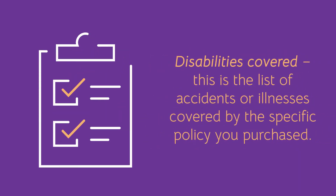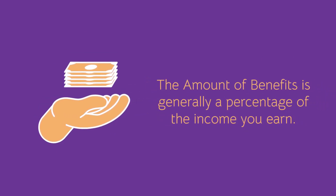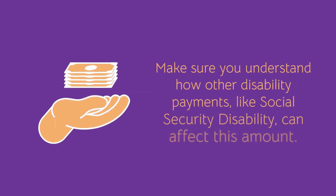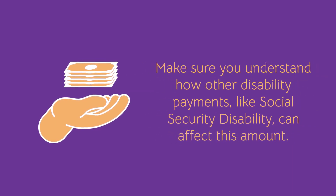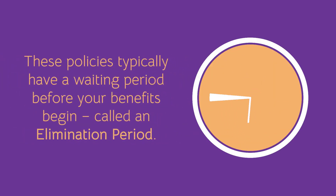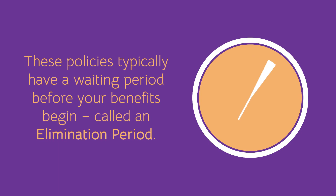Disabilities covered: this is the list of accidents or illnesses covered by the specific policy you purchased. The amount of benefits is generally a percentage of the income you earn — make sure you understand how other disability payments, like Social Security Disability, can affect this amount. These policies typically have a waiting period before your benefits begin, called an elimination period.